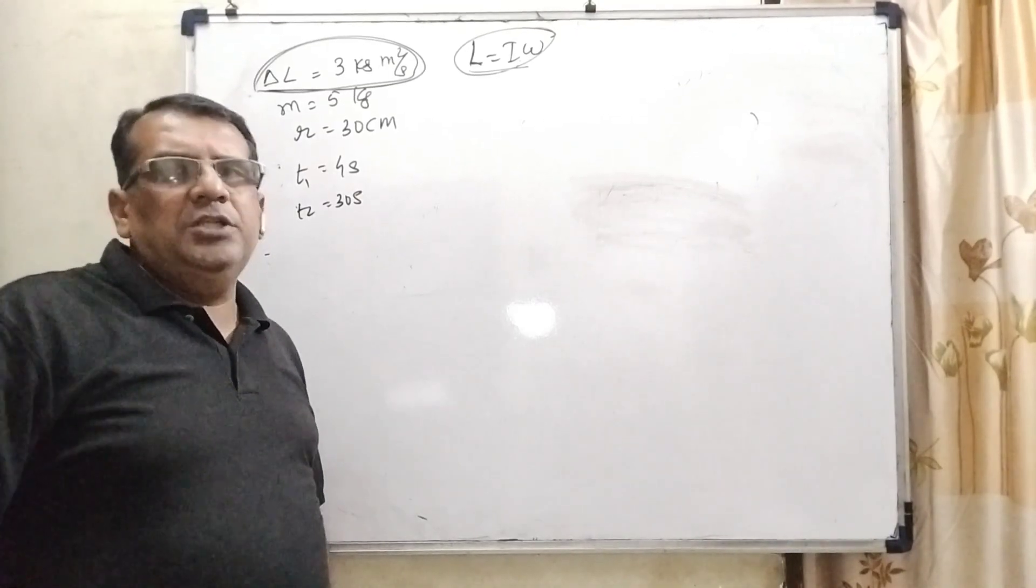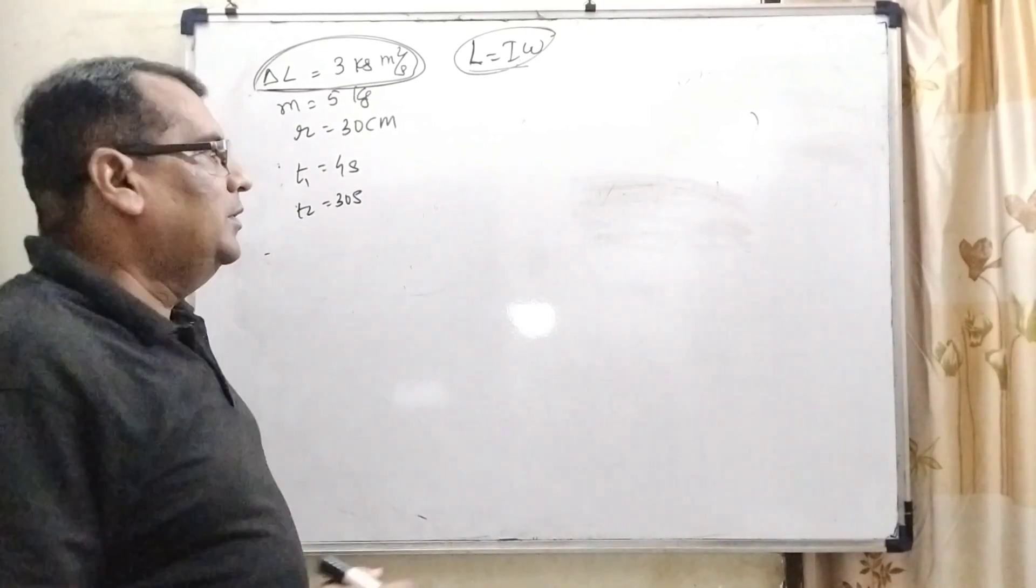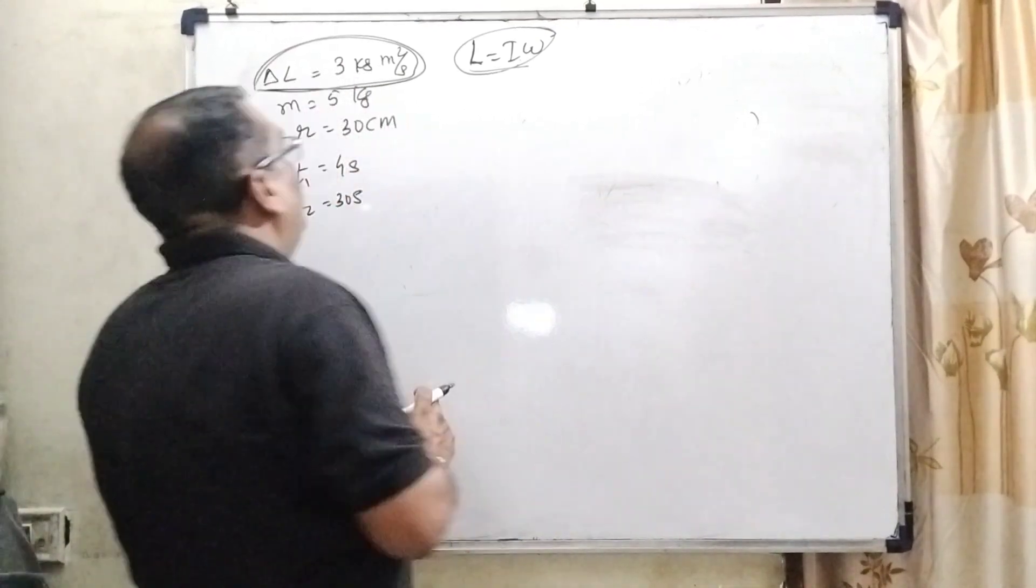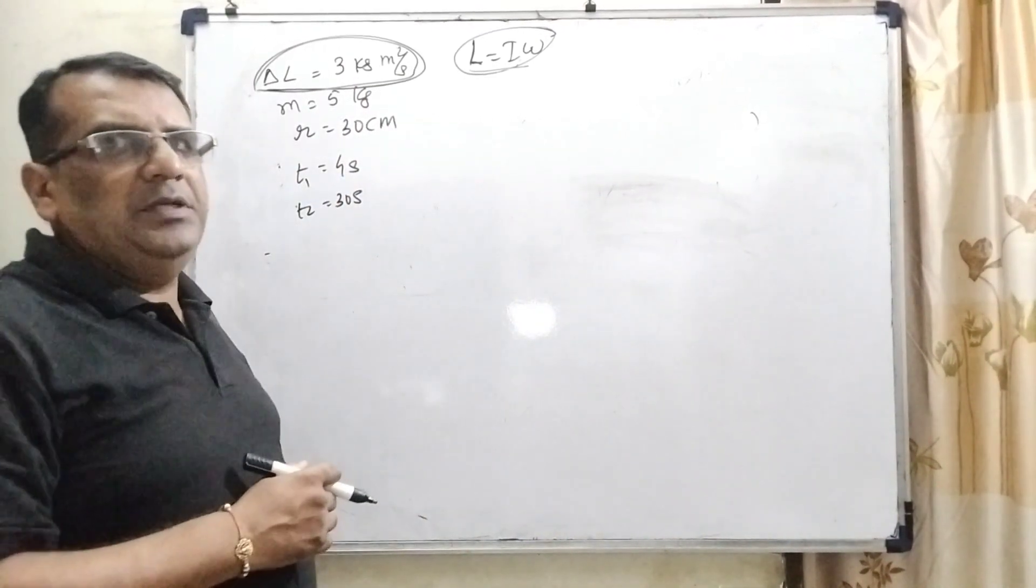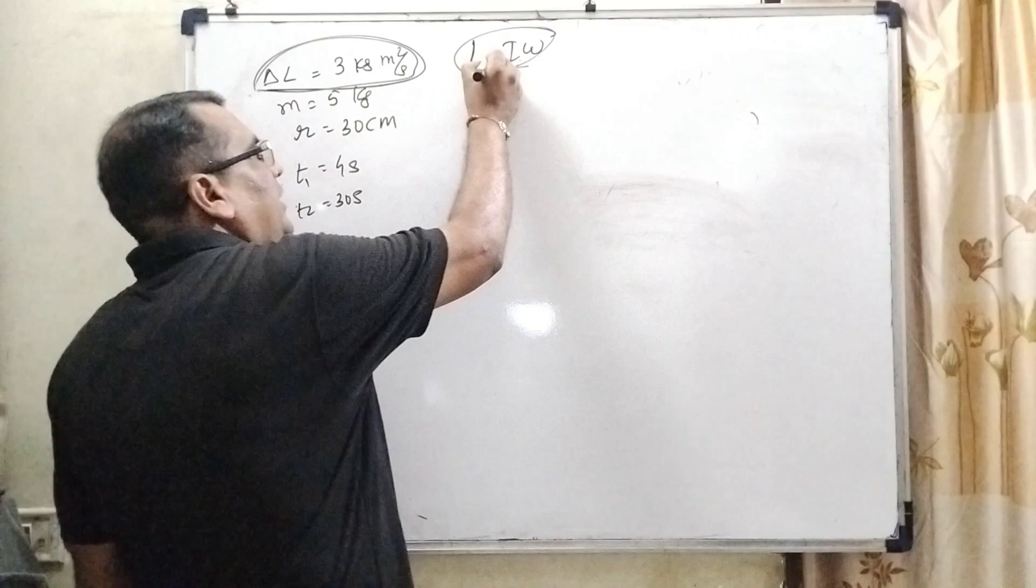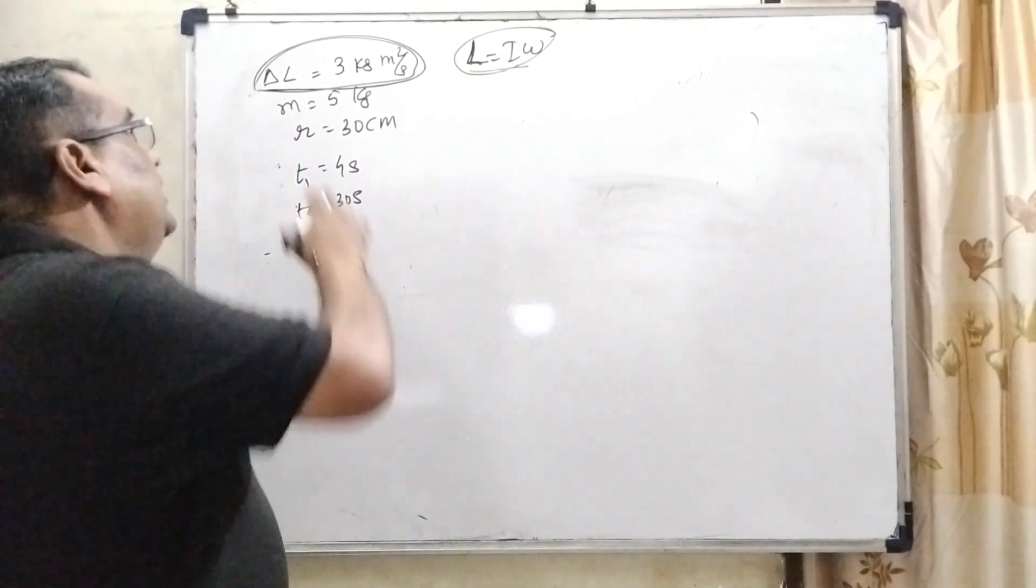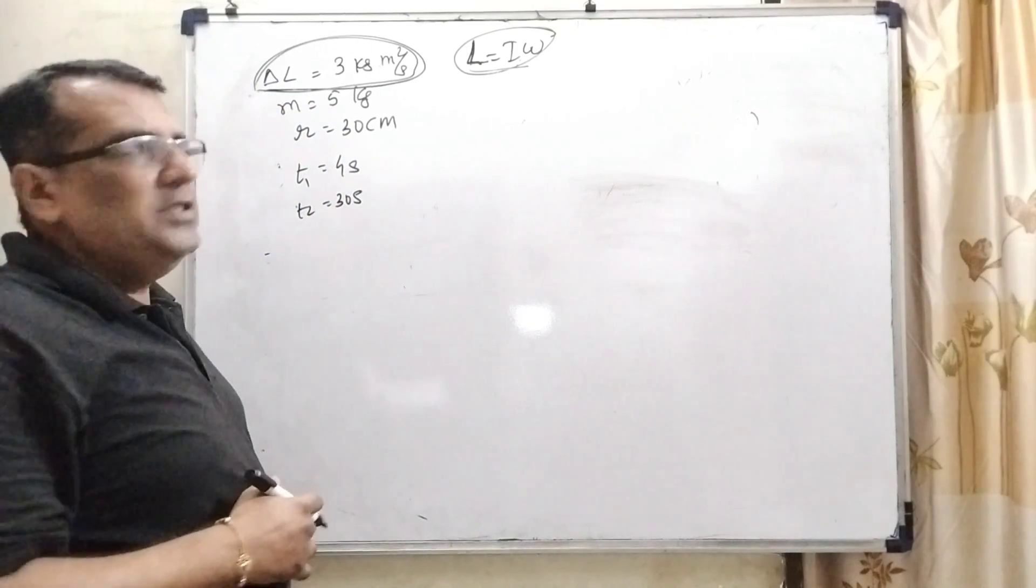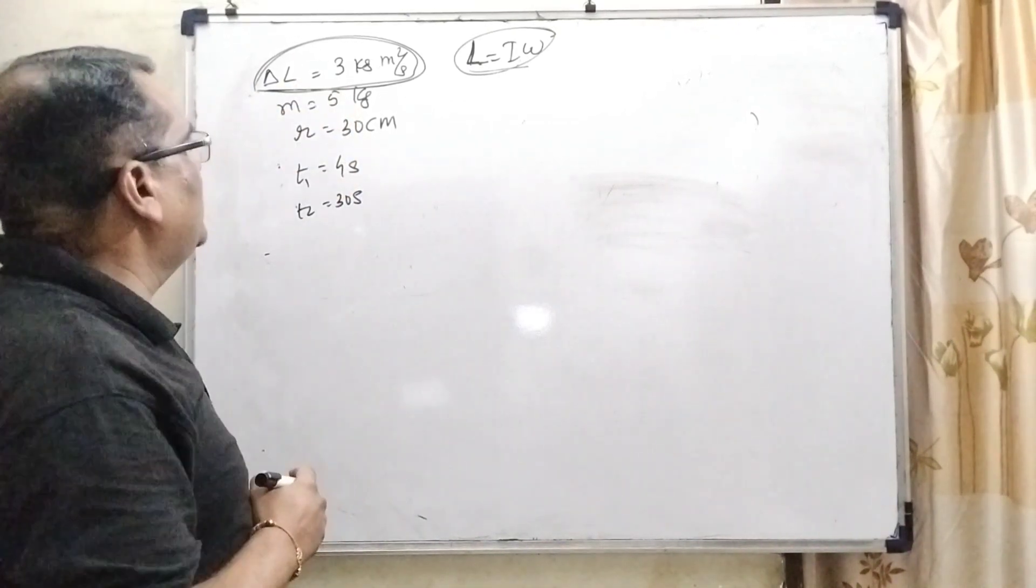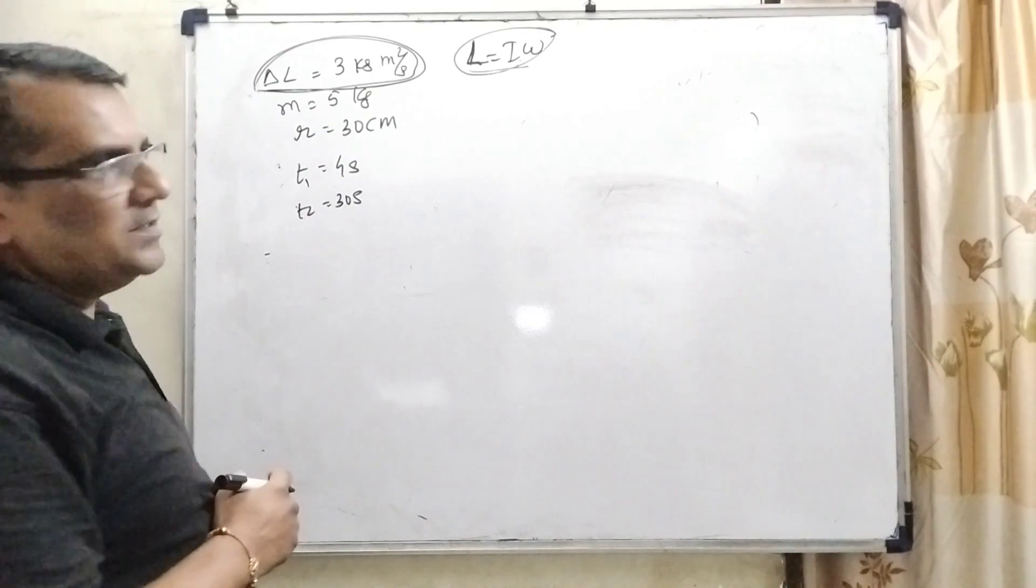This question is based on rotational kinematics. And here we have given that ΔI - delta I means L, as we know that angular momentum is given by I omega. But here, change in angular momentum means angular impulse. Here angular impulse is given as 3 kilogram meter squared per second.